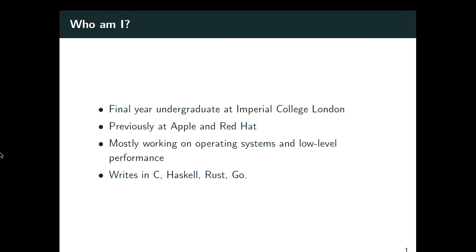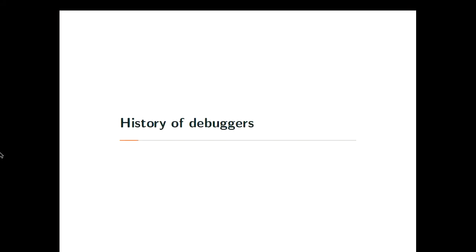I usually write code in C and Haskell — Haskell is my pet language, I just love it. Recently I started writing in Rust, and this debugger we're writing during this talk will also be written in Rust. I also sometimes write Go, but I'm not that excited about Go.